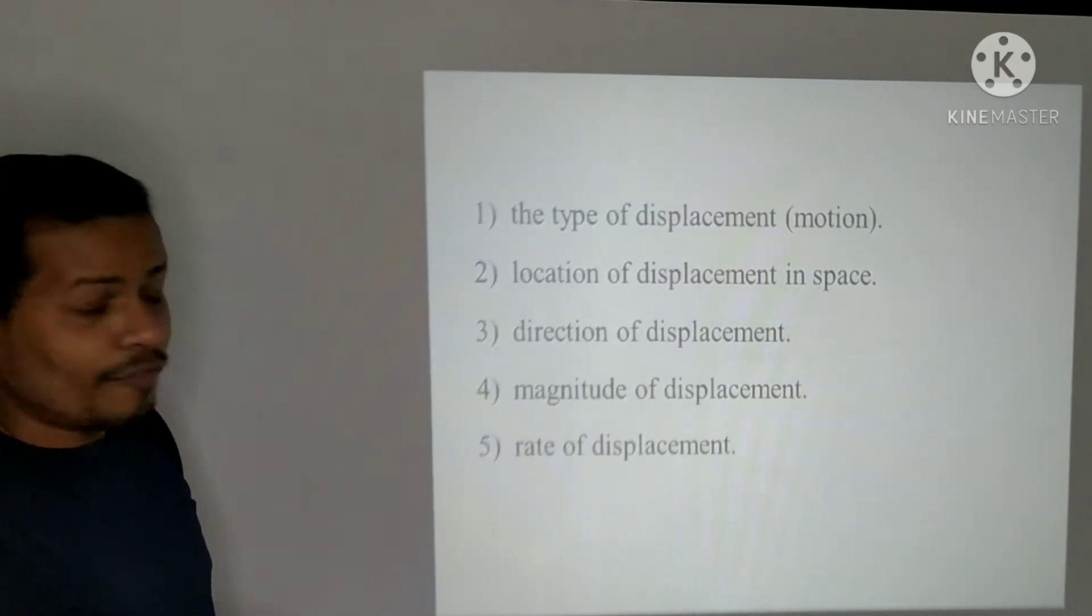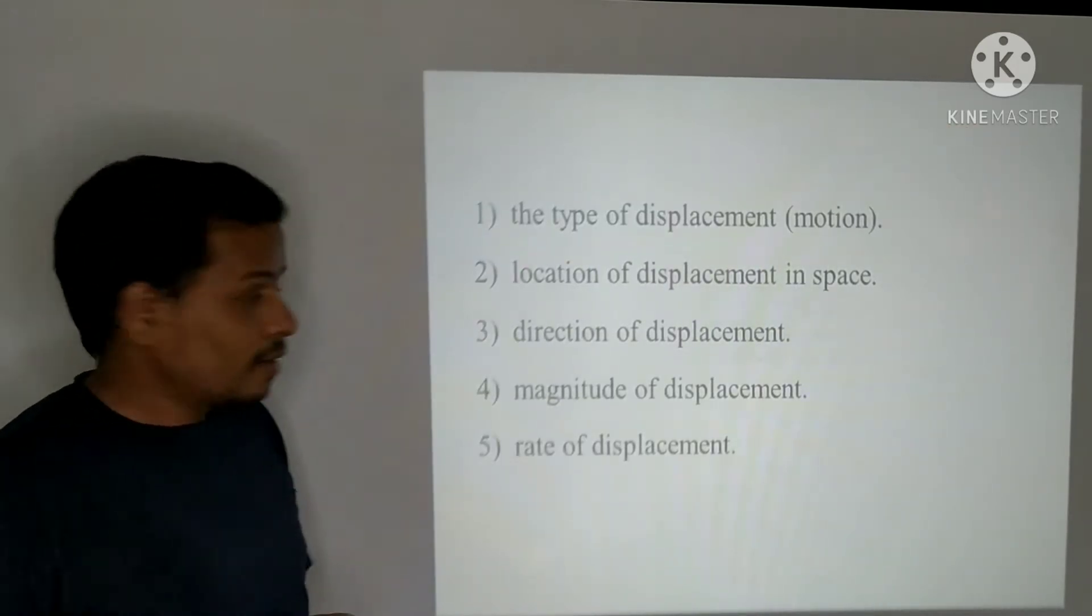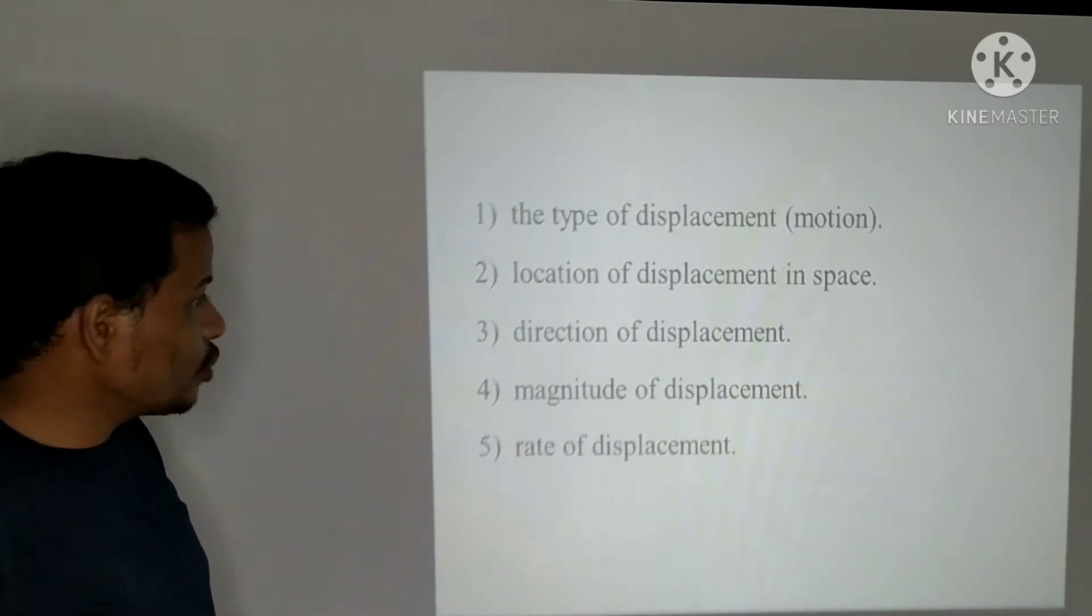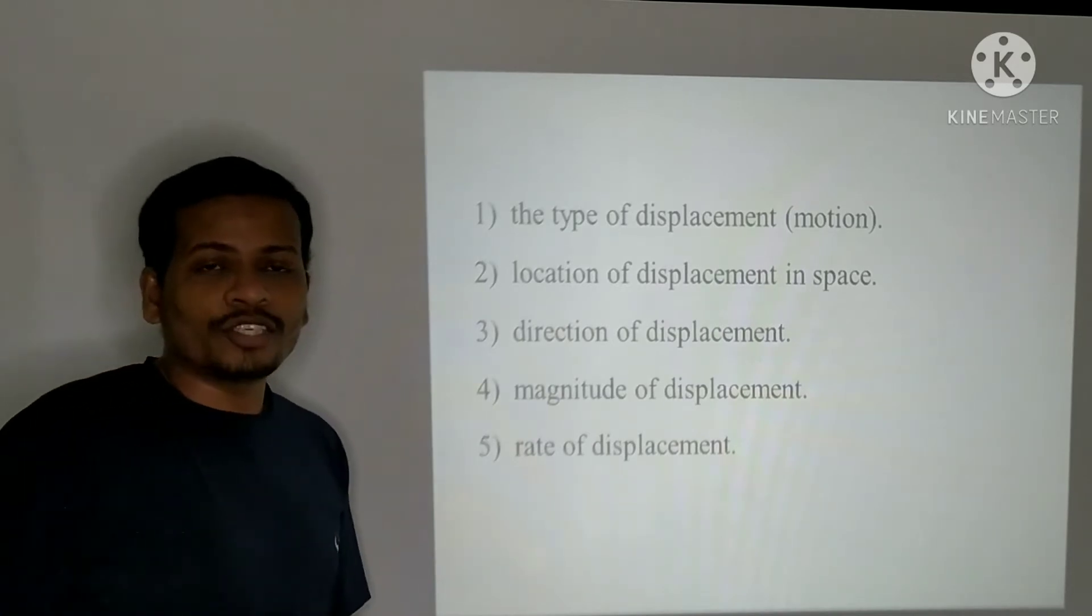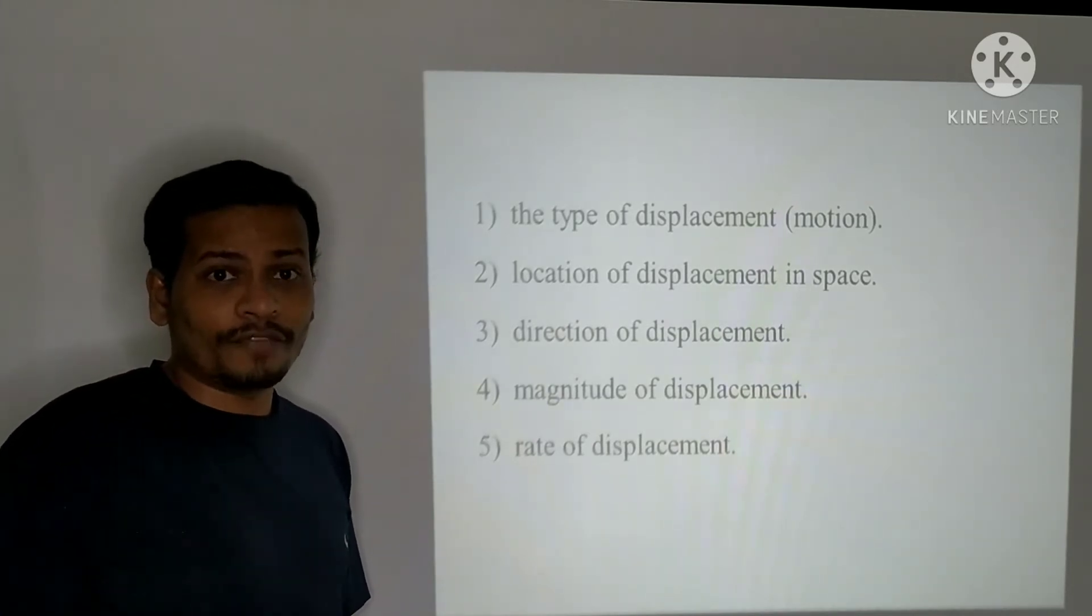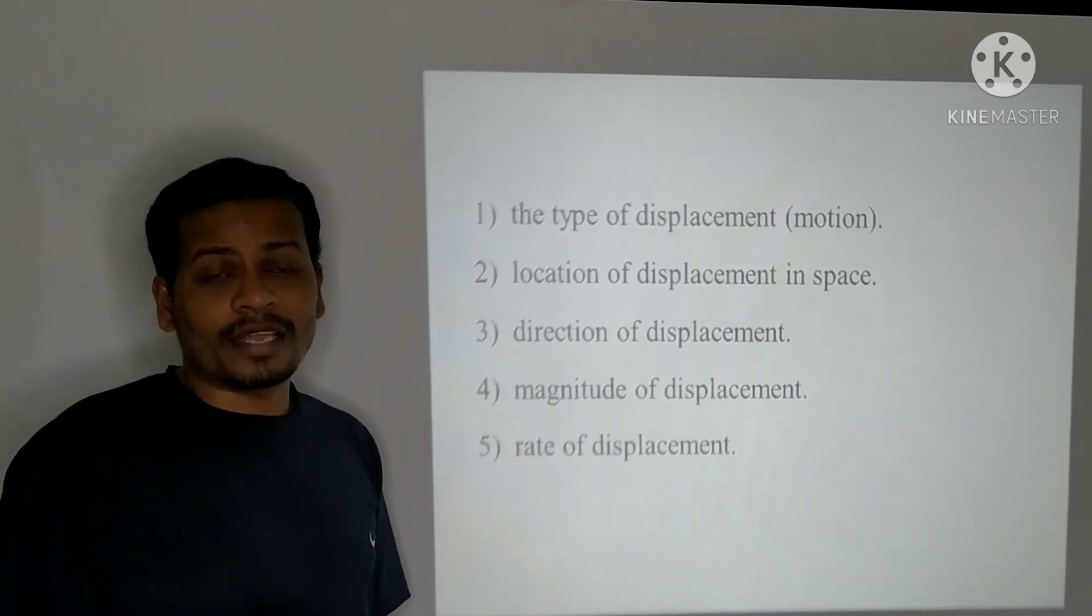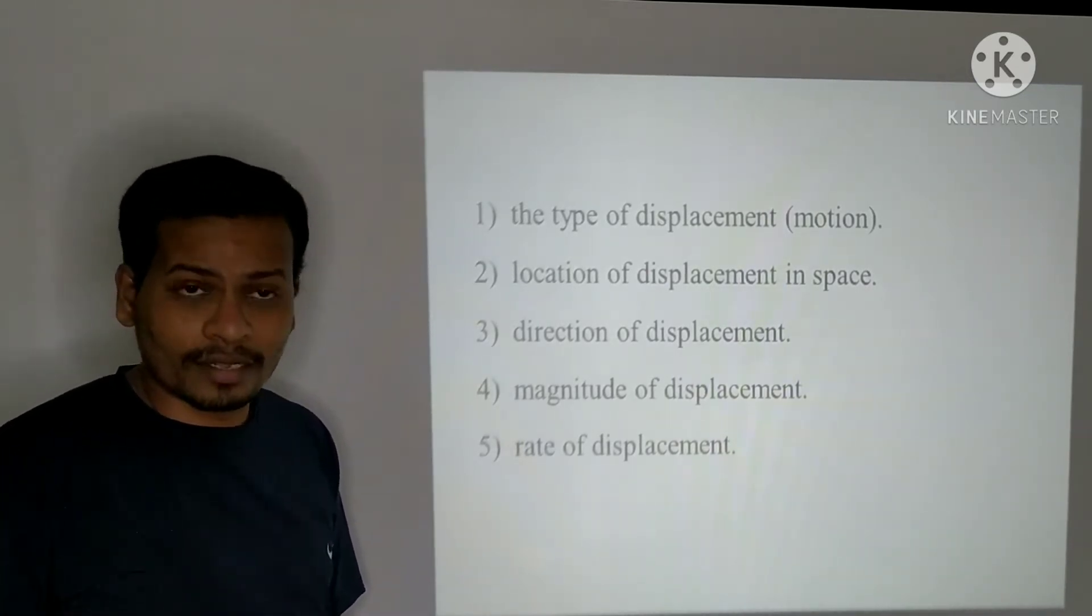There are the type of displacement, that is the displacement or motion, the location of the displacement in space and the direction of the displacement, the magnitude of the displacement, that is the amount of displacement or motion, and the rate of the displacement, that describes the speed at which the displacement or motion occurs.